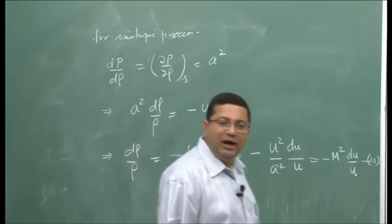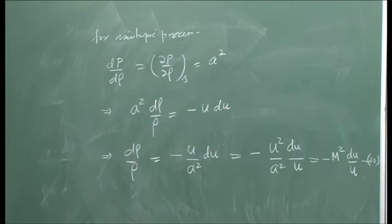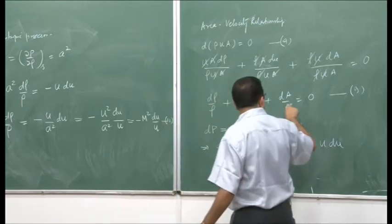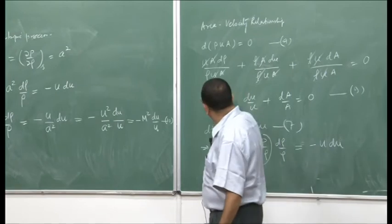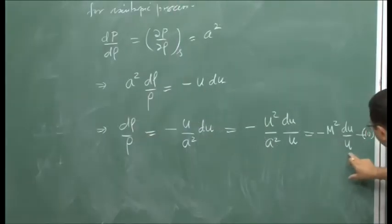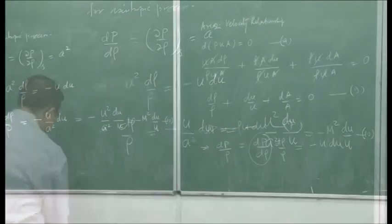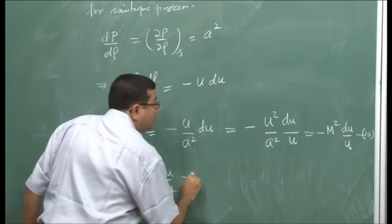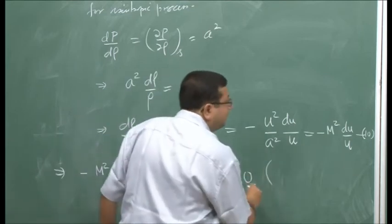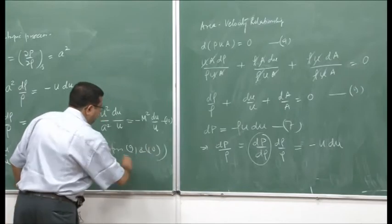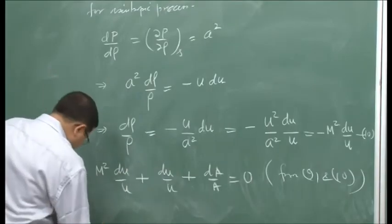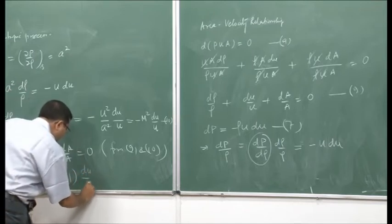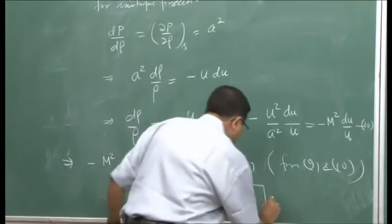We have now brought the Mach number into the picture by using the isentropic relationship and the definition of the speed of sound. Substituting equation 10 into equation 9, replacing dρ/ρ: -M²(du/u) + du/u + dA/A = 0. Simplifying, we get: dA/A = (M² - 1)(du/u). This is equation 11, the area-velocity relationship—a very important relationship that tells us a lot.